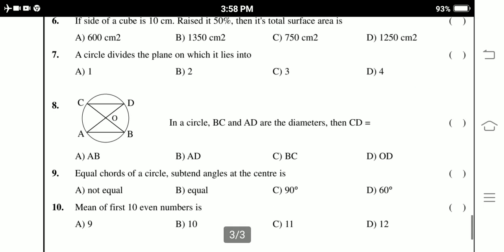In a circle, BC and AD are the diameters, then CD. Equal chords of a circle subtend angles at the center is. Mean of first 10 even numbers is.